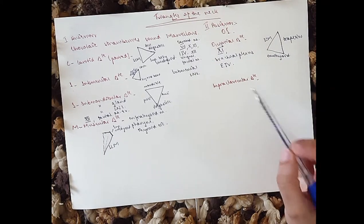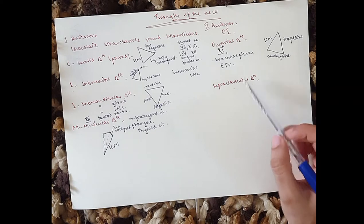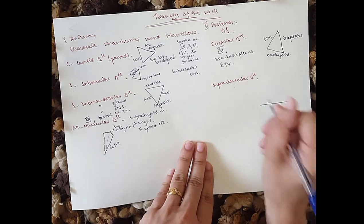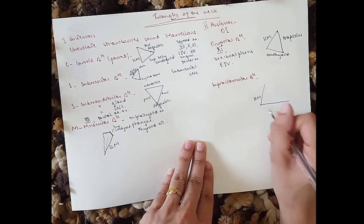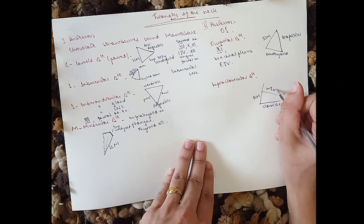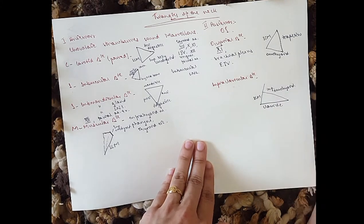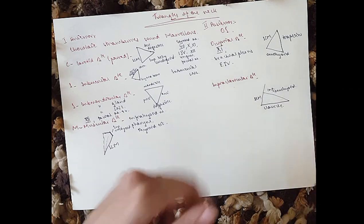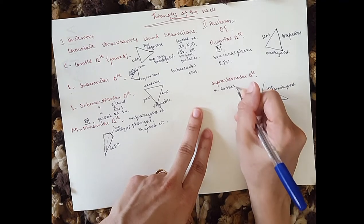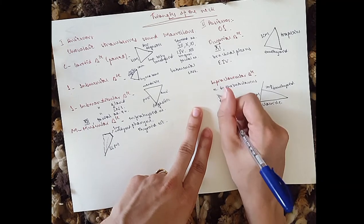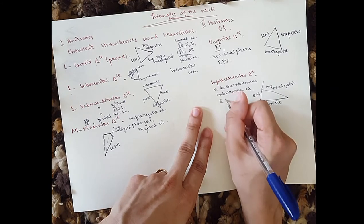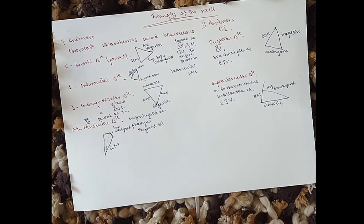Then we move on to the supraclavicular triangle. As the name suggests, it's above the clavicle. So you've got the clavicle as the base, then you've got the sternocleidomastoid, and then the inferior belly of the omohyoid. For contents, you've got the nerve to the subclavius — it's also called the subclavian triangle — so you've got the nerve to the subclavius, the subclavian artery, and the external jugular vein. That is it for the triangles of the neck.